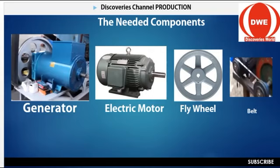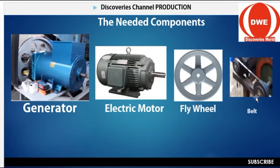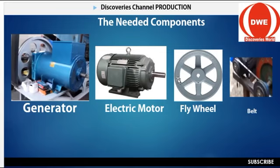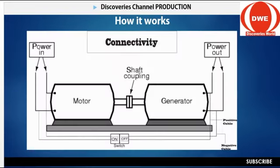Let's now see the components. These are: the generator, the electric motor, the flywheel, and the belt. The belt joins the two flywheels together — sometimes the flywheel needs the belt to join together. So these are the four components you need: the generator, the motor, the flywheel, and the belt. As far as producing a self-running generator is concerned, you must have these four components. If you have these components in your place, in your house, or in your production area, you will surely produce this self-running generator.